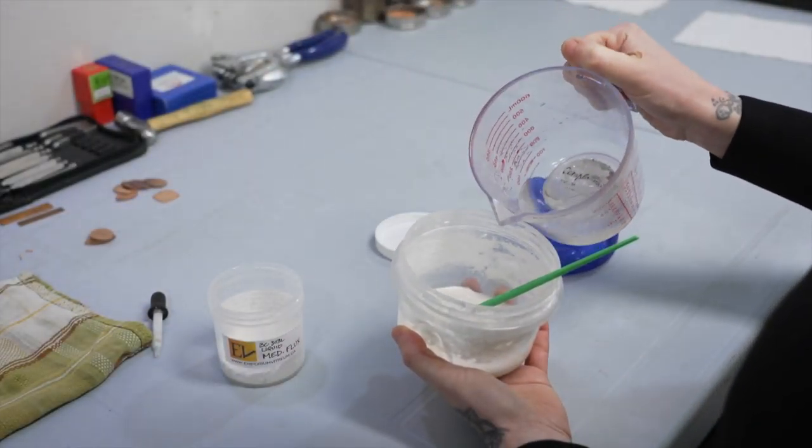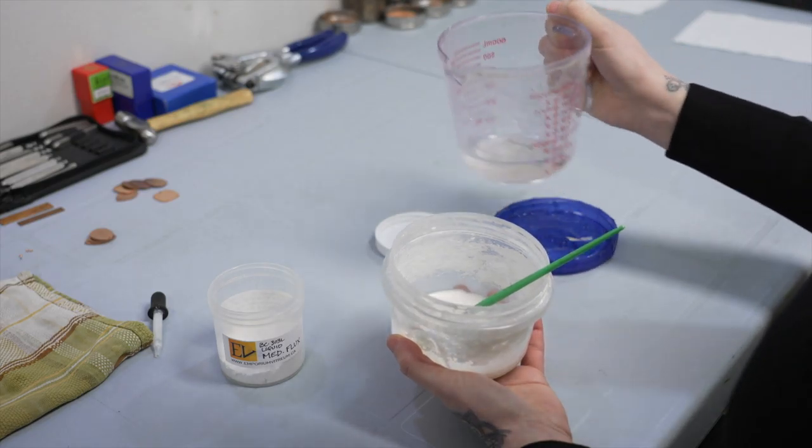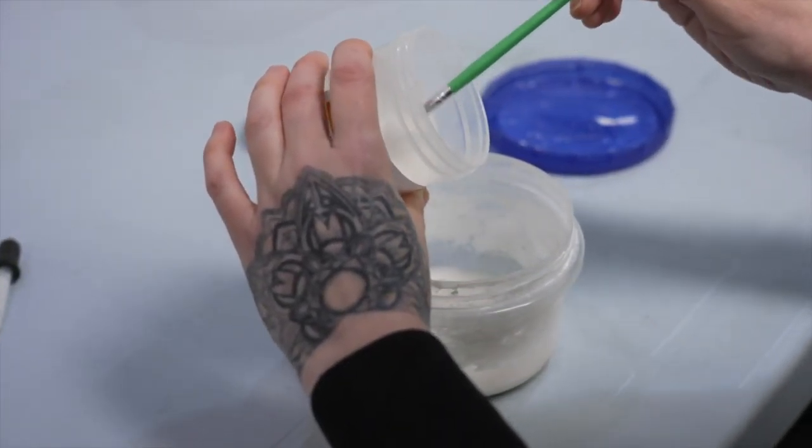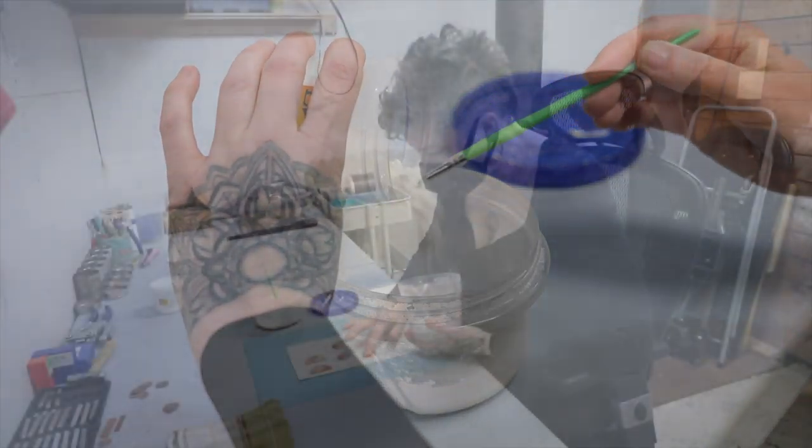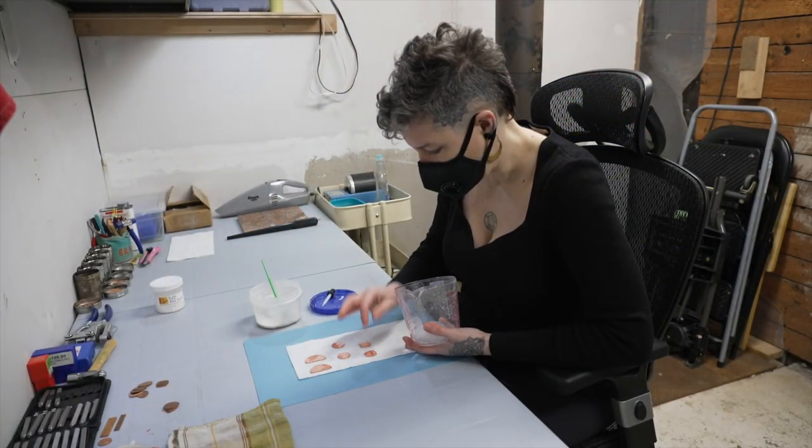Now a clear coat of enamel is prepared. White enamel powder is stirred in water. It's such a fine powder, it must be mixed very slowly. Then the copper necklace pieces are laid out.